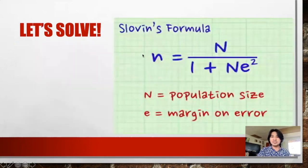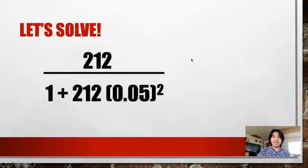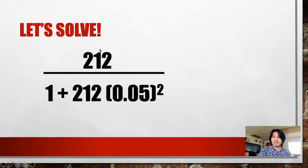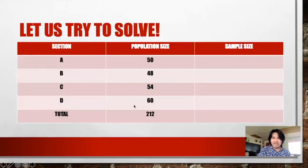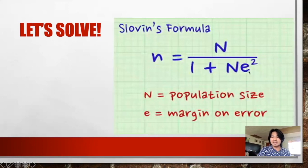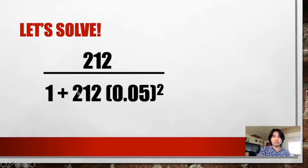Now, how are we going to solve for the sample size? Let's use Sloven's formula. The N here is 212, that's the total population size. So n equals 212 over one plus N times e squared. The e here is the margin of error, which is 0.05.